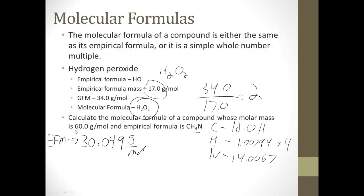However, the molar mass is 60 grams per mole. So I'll take the 60 grams per mole, divide it by the 30.049 grams per mole. Those will cancel. And I'm going to get a multiplier of 2. So that means I have to take my whole CH4N, multiply by 2, and I get C2H8N2.